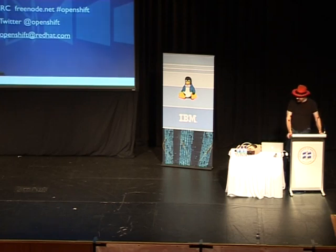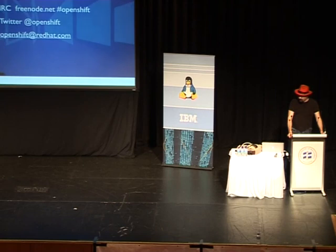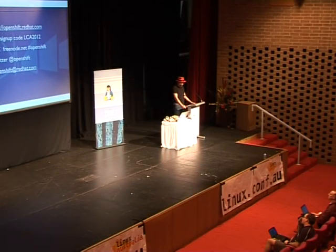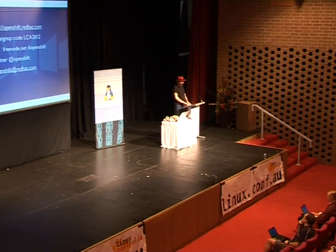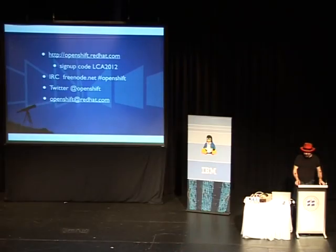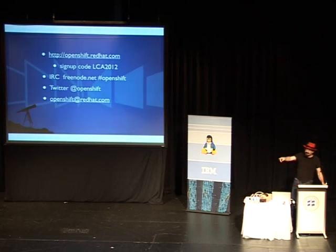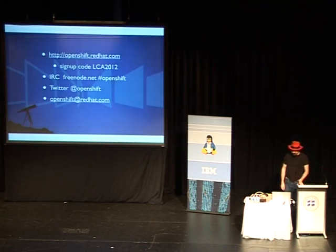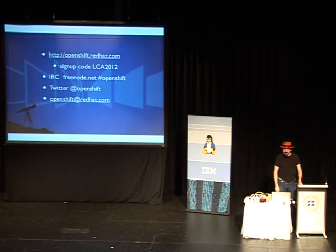First, the contact information. We're at openshift.redhat.com — that's kind of easy to remember. I've got a sign-up code: LCA2012. Anyone who signs up by the end of the conference and gives that code, or just shows me they've signed up, I have a box of T-shirts and hoodies in the back. We're on Freenode at #OpenShift, we have a Twitter handle, and an email address we all read and respond to.